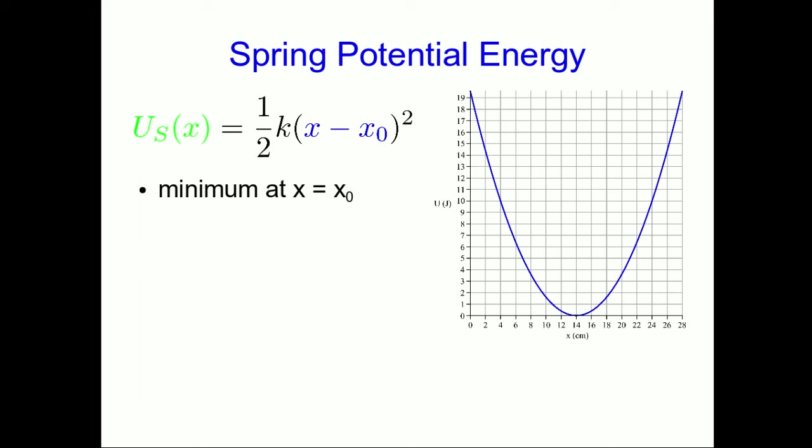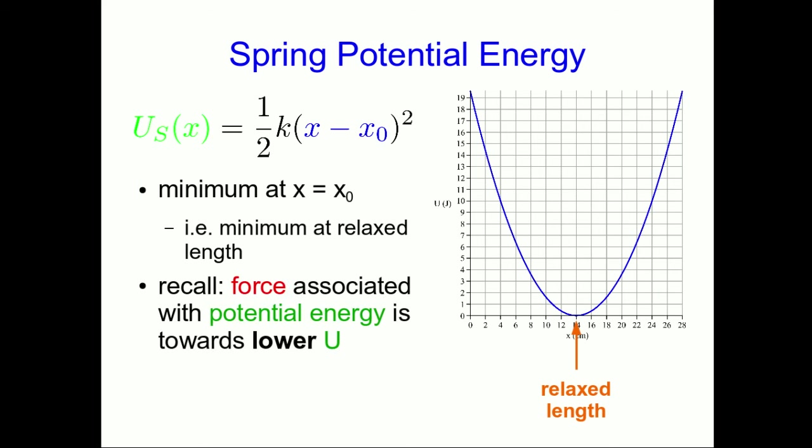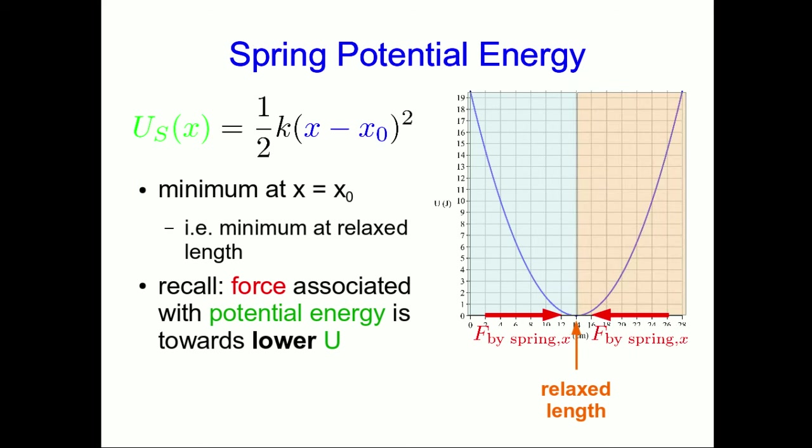So here's our expression for spring potential energy. And note that it's a minimum at x equals x naught. Or in other words, the spring potential energy is a minimum when the spring is at its relaxed length, which we already knew. Also recall that the force associated with any potential energy is always towards lower potential energy. So in this whole region, the force by the spring must be to the right. And in this whole region, the force by the spring must be to the left. But that's just telling us what we already knew, which is that the force by the spring is always back towards its relaxed length.